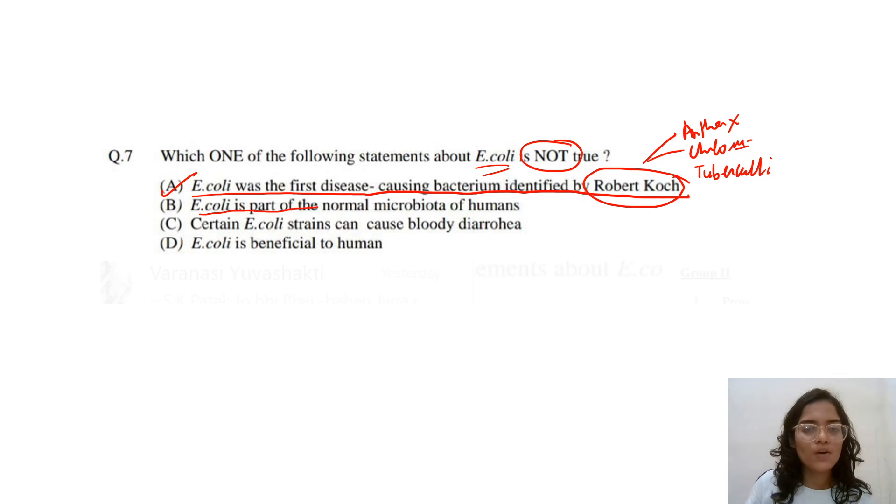Then, E. coli is a part of normal microbiota in humans. Certain E. coli strains can cause bloody diarrhea. Now, if you get option A as an answer, you just tick the next question.